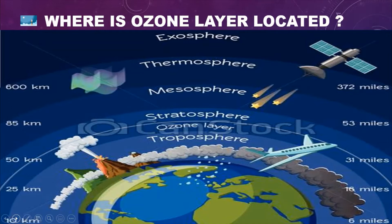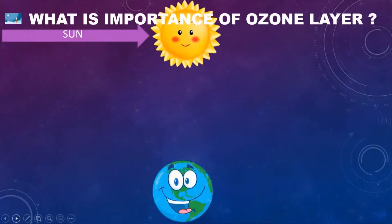The atmosphere has many layers like the troposphere, stratosphere, mesosphere, thermosphere, and exosphere. The ozone layer is located in the stratosphere — I even marked it for you. Now, what is the importance of the ozone layer?